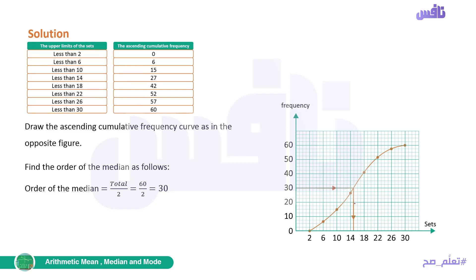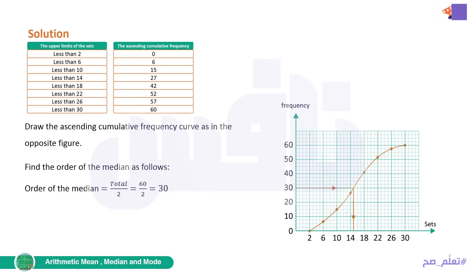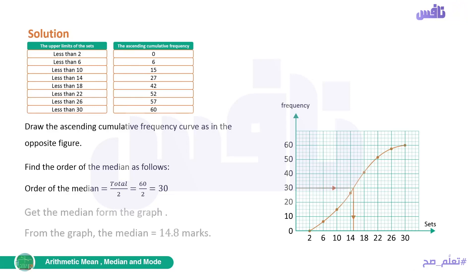From where the arrow meets the curve, we drop a vertical line down to the x-axis to identify the median. The sets around that point are 14 and 18, so the midpoint is 16. We dropped before 16, giving approximately 14.8. From the graph, the median approximately equals 14.8 marks.